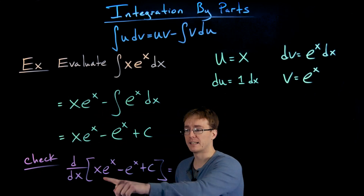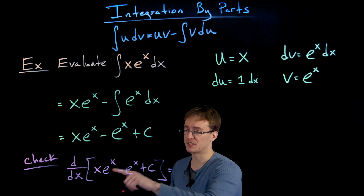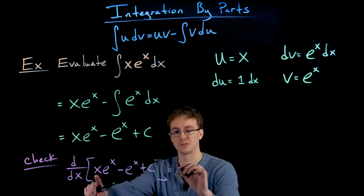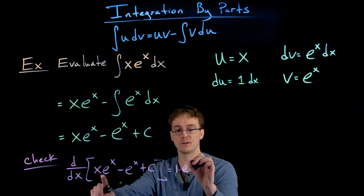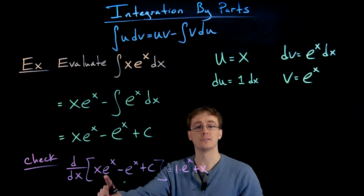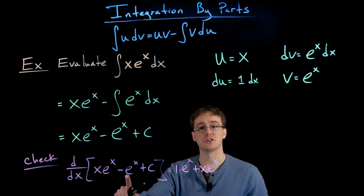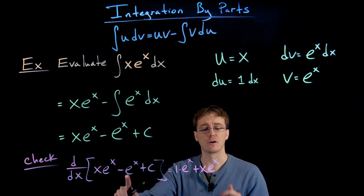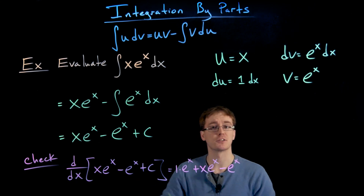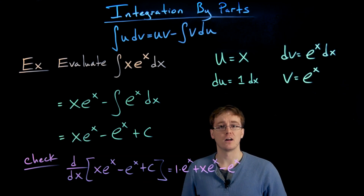To take the derivative of the first piece of our antiderivative we use the product rule: derivative of the first times the second, plus the first times the derivative of the second. The derivative of x is 1, multiplied by e to the x, plus x times the derivative of e to the x — which is e to the x. Then we subtract the derivative of e to the x, which is again e to the x, and the derivative of the constant C is 0.